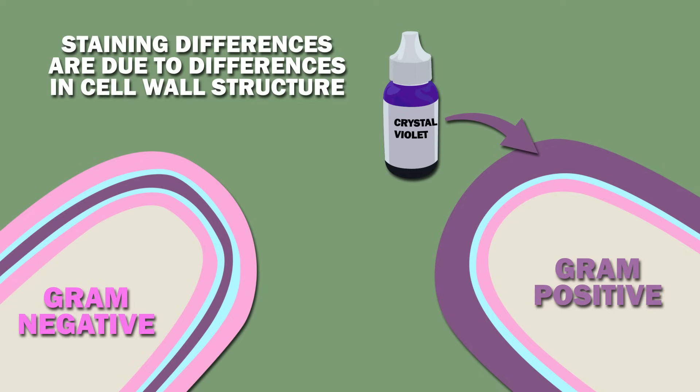Gram-negative bacteria do not retain the dye for two reasons: they have an outer membrane getting in the way of the crystal violet, and they lack sufficient peptidoglycan to retain the stain.